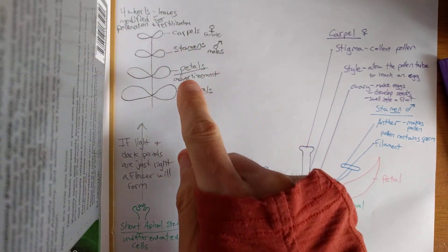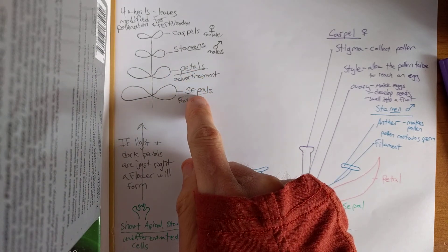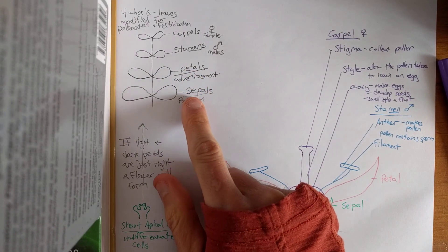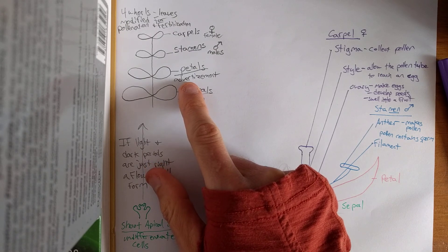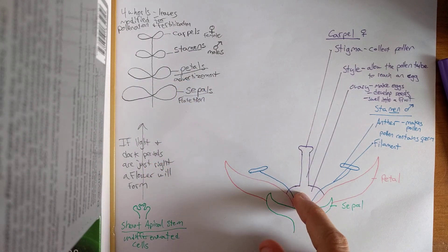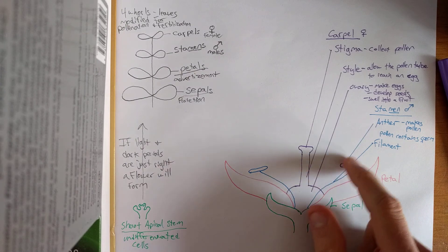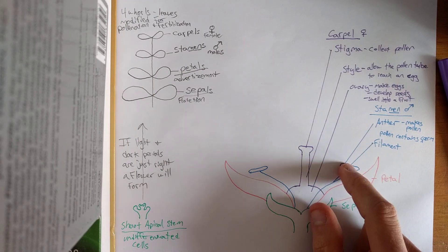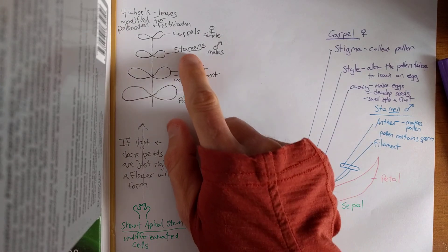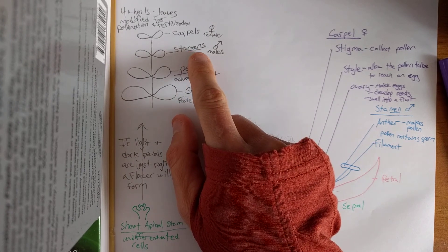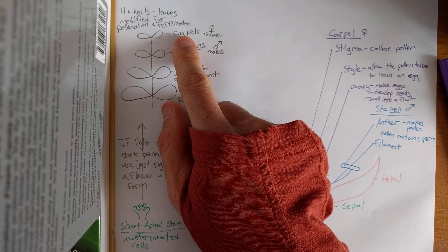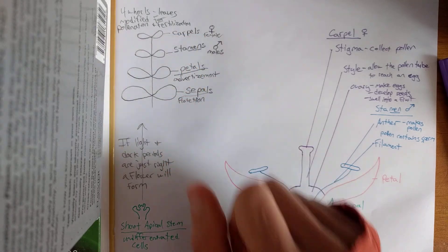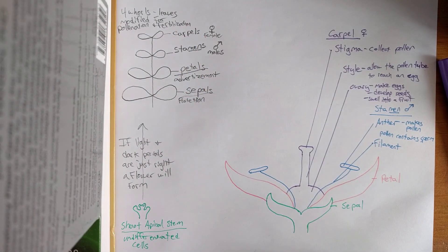So remember your four whorls and a complete flower. Carpals, stamens, petals, sepals. Sepals are protection during development. Petals are advertisement when the flower is ready. Really when the eggs are receptive. And or the pollen is ready for production. Stamen. Men for men. Males. That's the male reproductive role. And carpals. Female reproductive role. Adios everybody.